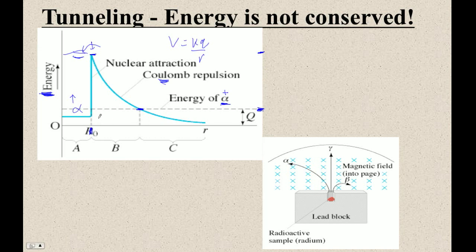Here's what we know is happening: it somehow gets through the barrier. Now, the notion of tunneling is that it digs a tunnel through — but that's not at all what's going on. What's going on is it's just the Heisenberg uncertainty principle. The energy of small objects is uncertain.